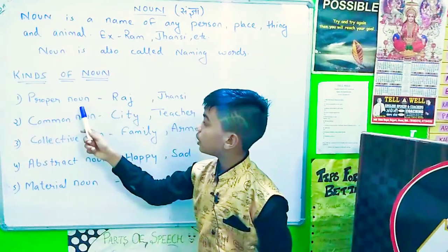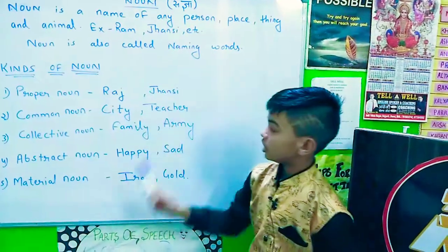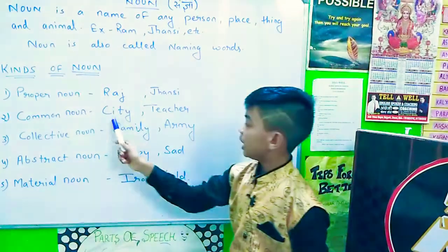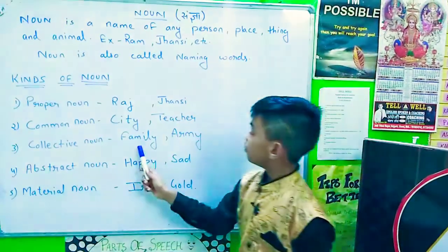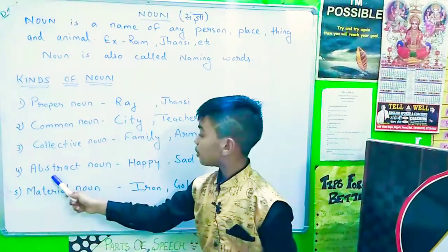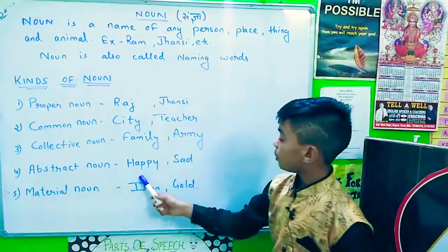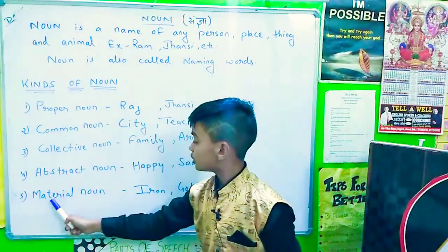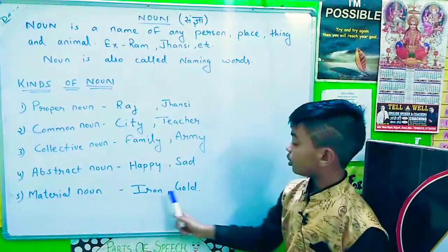Example of proper noun is Raj, Jhansi. Example of common noun: city, teacher. Example of collective noun: family, army. Example of abstract noun: happy, sad. Example of material noun: iron, gold.